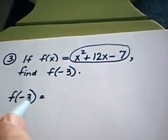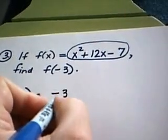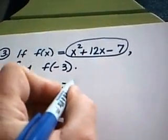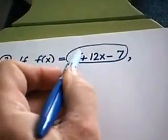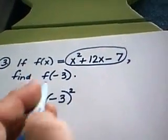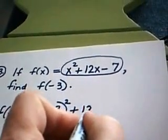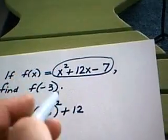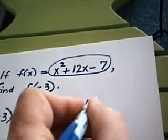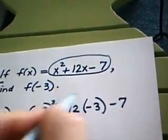f of negative 3 is equal to negative 3, the entire quantity being squared, because it says take x and square it, all of it, plus 12 times, in the place of x, we're putting negative 3, and then minus 7.